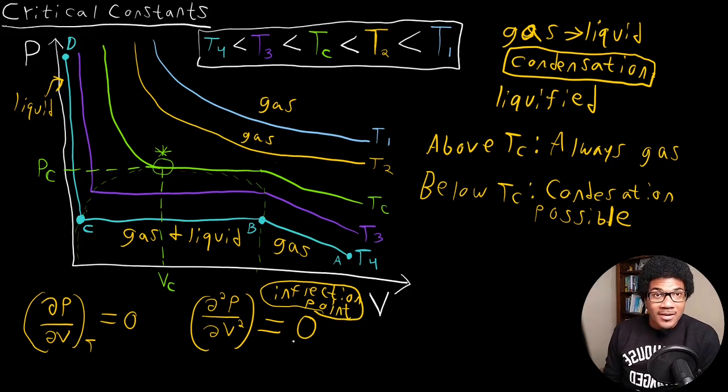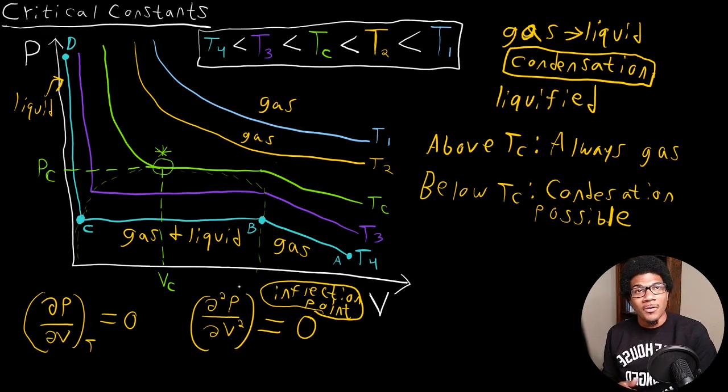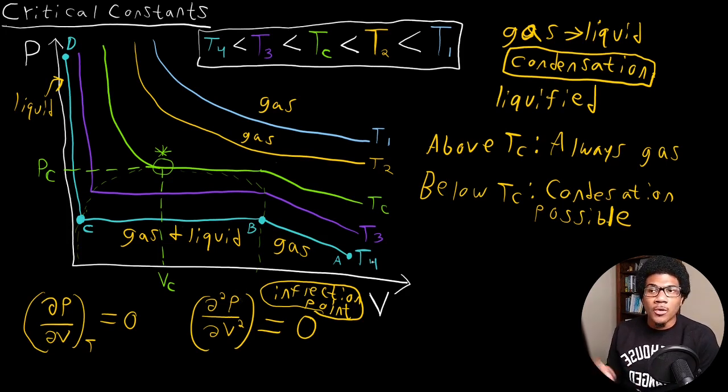So what this does is gives us some tools, if we have a state equation, to be able to actually derive specific expressions for the critical temperature, the critical volume, and the critical pressure, related to the variables of that state equation. So in order to show this in the next video, we're going to look at deriving the expressions for the critical temperature, pressure, and volume for van der Waals gas using the van der Waals equation of state.